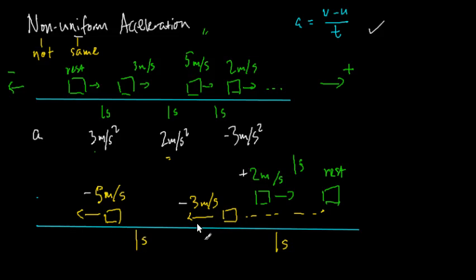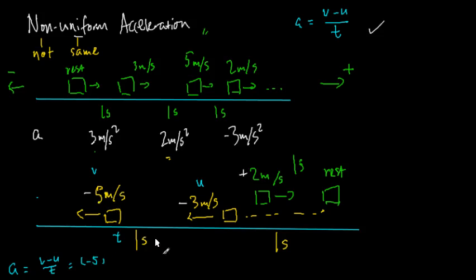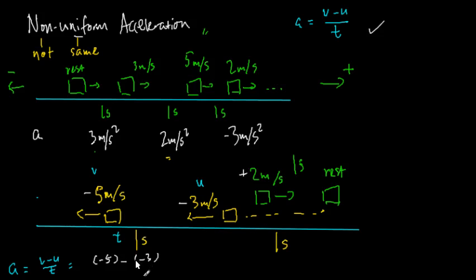Let me now find the acceleration over the one second where velocity changes from minus three to minus five. Here, the final velocity v is minus five meters per second and the initial velocity u is minus three meters per second, and t is one second. So acceleration equals v minus u over t, which is minus five minus minus three, all divided by one. Working this out carefully: minus five plus three equals minus two, so the acceleration is minus two meters per second squared.